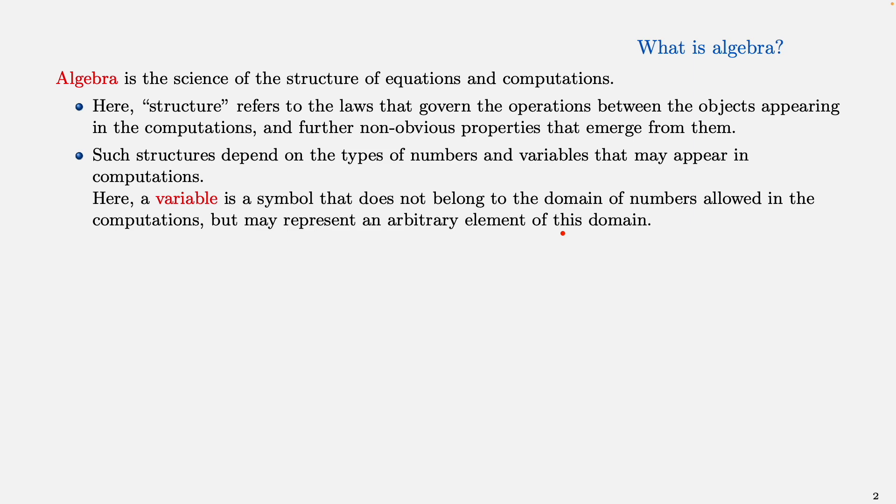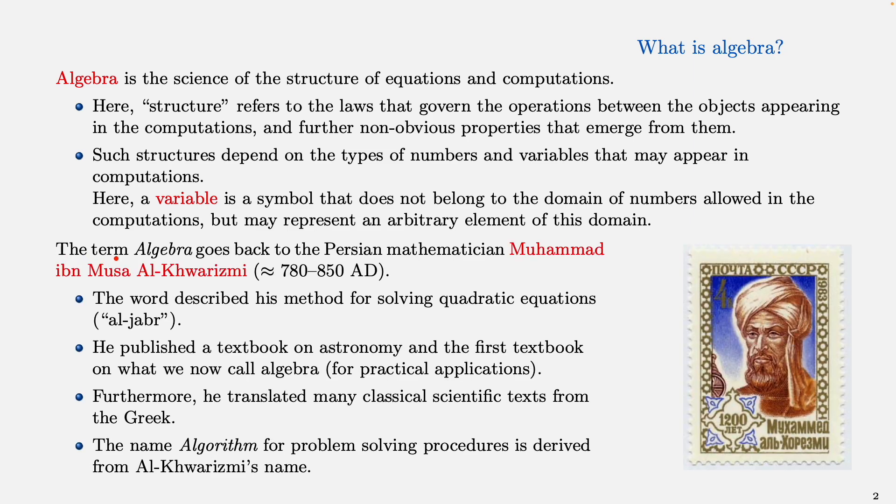The term algebra goes back to the Persian mathematician Muhammad ibn Musa Al-Khwarizmi in the 8th to 9th century, and it actually comes from his method for solving quadratic equations. Among his achievements are a textbook on astronomy and the first known textbook on what we nowadays call algebra. This is where this term originates from, and back then algebra was not studied as a pure math area.